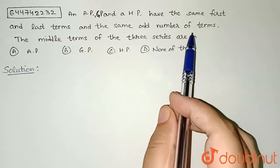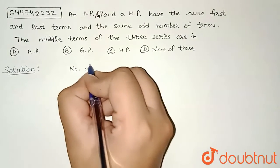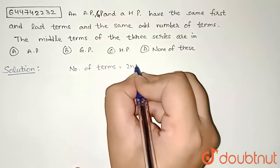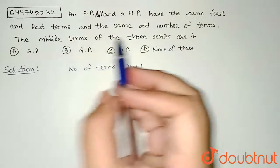same odd number of terms. That means the number of terms in each of the series equals 2n+1, since odd number of terms. And we are told that